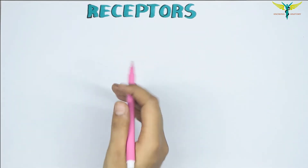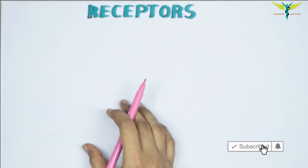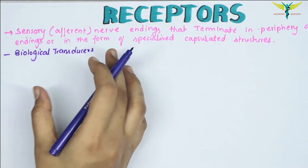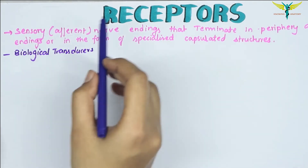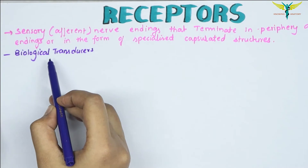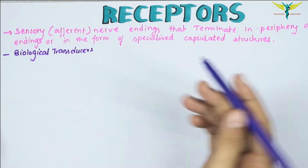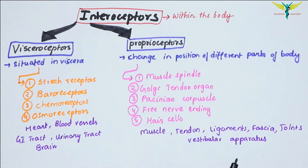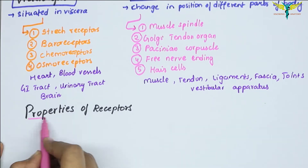The receptors are the sensory or afferent nerve endings that terminate in the periphery as bare unmyelinated nerve endings, or in the form of specialized structures. Receptors function like biological transducers — a transducer is a device which converts one form of energy into another. So receptors are defined as biological transducers which convert various forms of energy, that is stimuli from the environment, into the action potential of the nerve fiber.